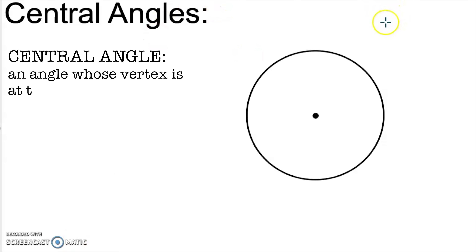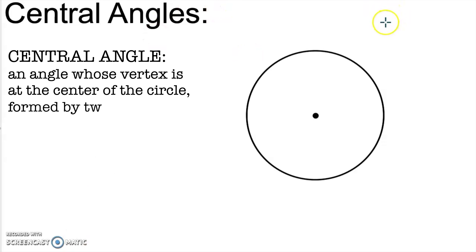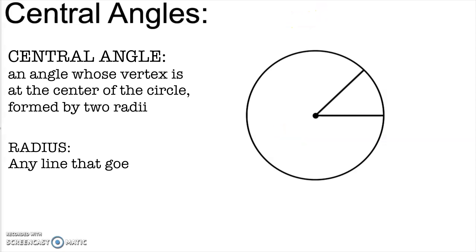Hey everyone, I'm Mr. A, and today we're going to talk about angles you can find in circles. We're going to start off with the most basic angle we can find in a circle, and that's what we call a central angle.